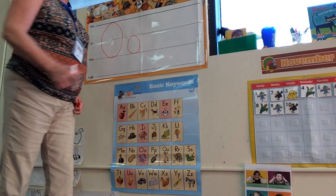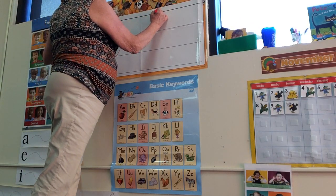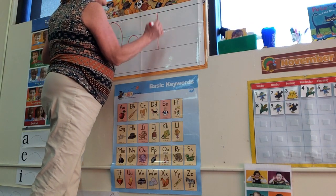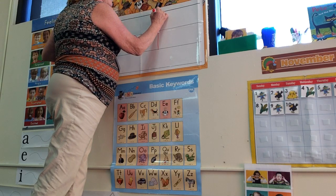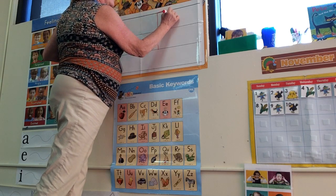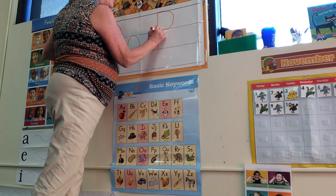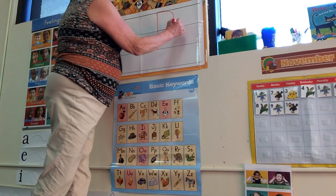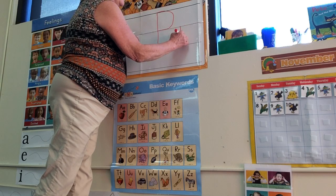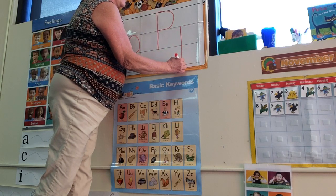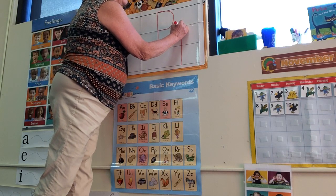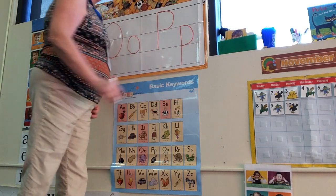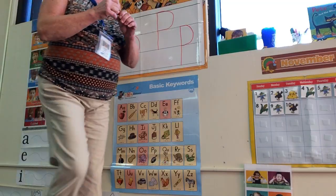Now for the P, we're going to start on the skyline, go straight down to the grass line. Then we're going to go back up to the skyline and curve around to the plane. And that's an uppercase P. In lowercase, we're going to start on the plane, go down to the worm line, go back up to the plane line and curve around. And that is a lowercase P.